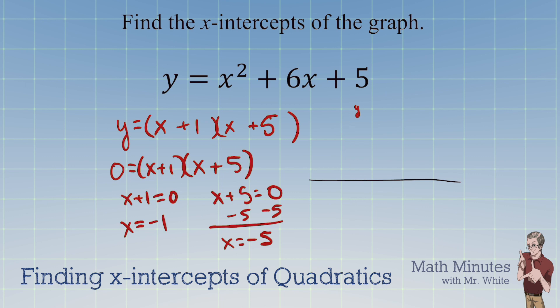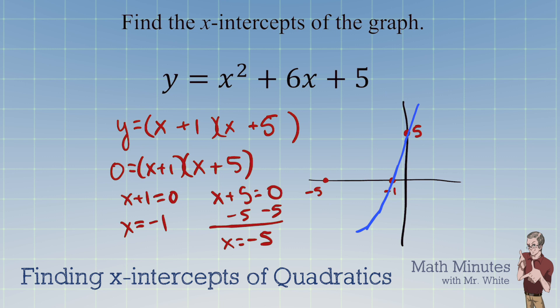I'm going to redraw this graph. The graph goes through 5 on the y-axis, negative 1, and negative 5. The leading coefficient is positive, so this is a parabola opening up. The axis of symmetry is right in the middle, which goes through negative 3. We could even find the vertex by plugging that in — but first I wanted to show you how to find the x-intercepts.